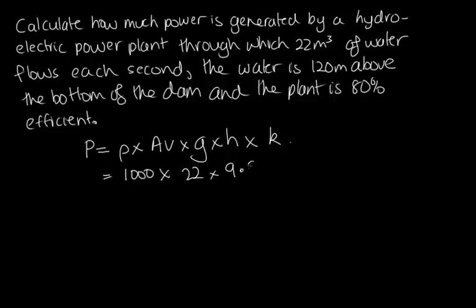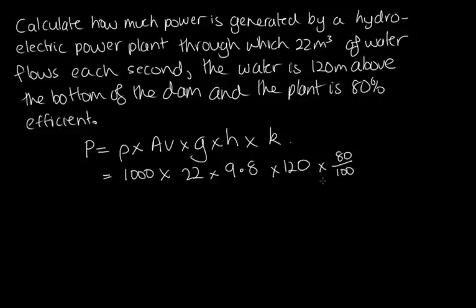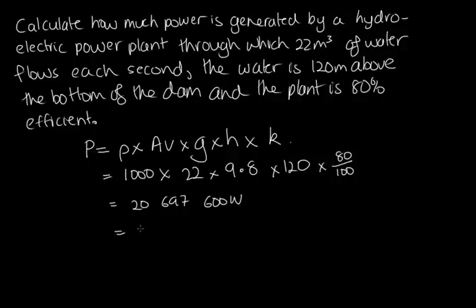g is the acceleration due to gravity, 9.8. h is the height of the water above the dam, which is 120 metres. k, the efficiency, is 80% = 0.8. Putting all that into the calculator gives 2,697,600 watts, which we can write as approximately 20.7 megawatts, where mega is 10 to the 6.